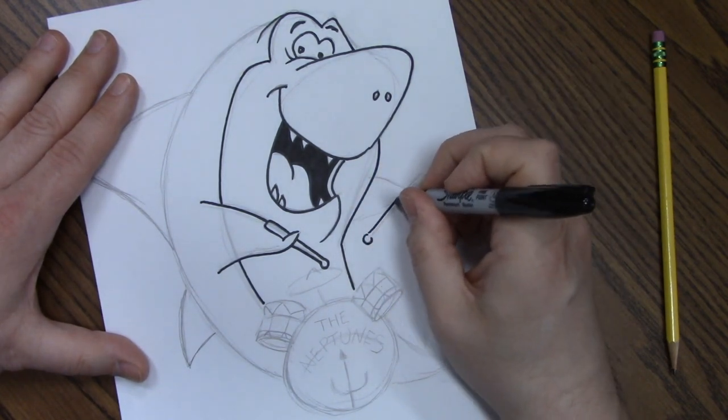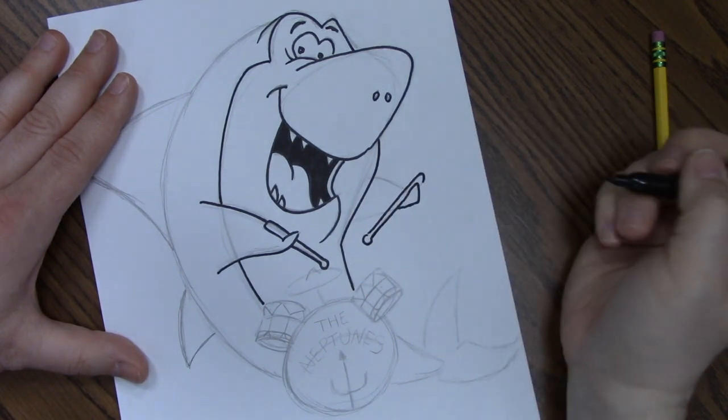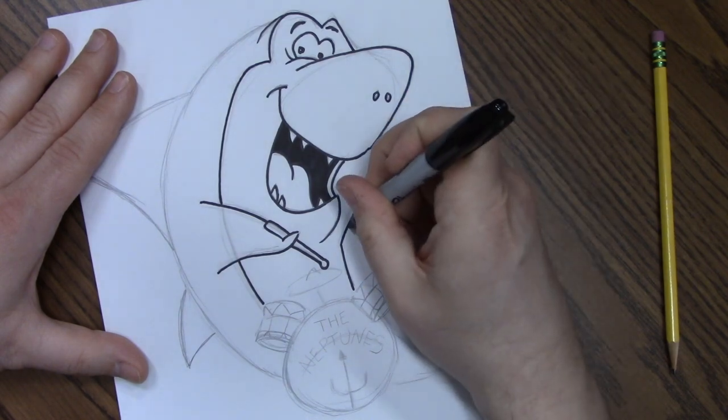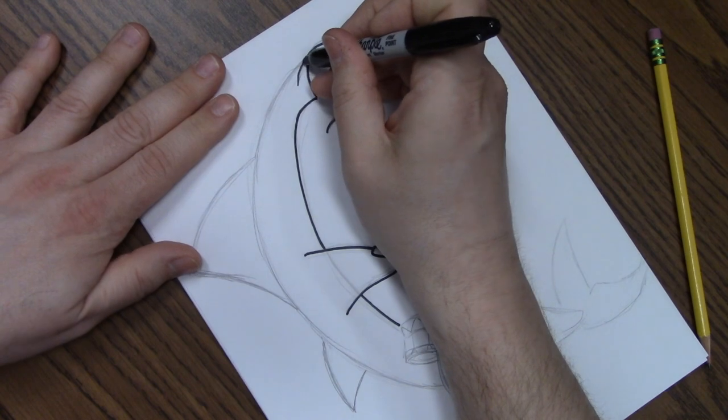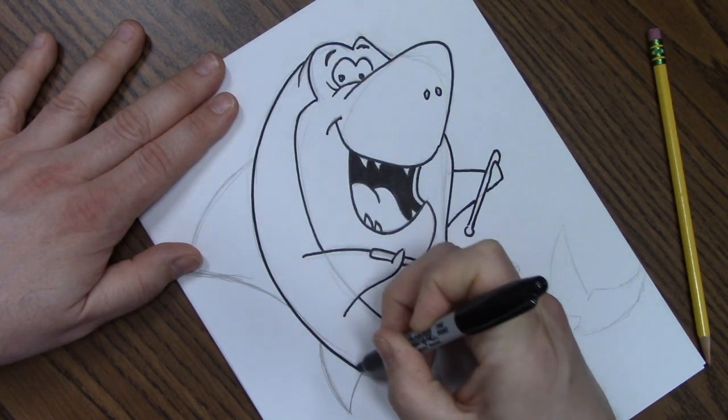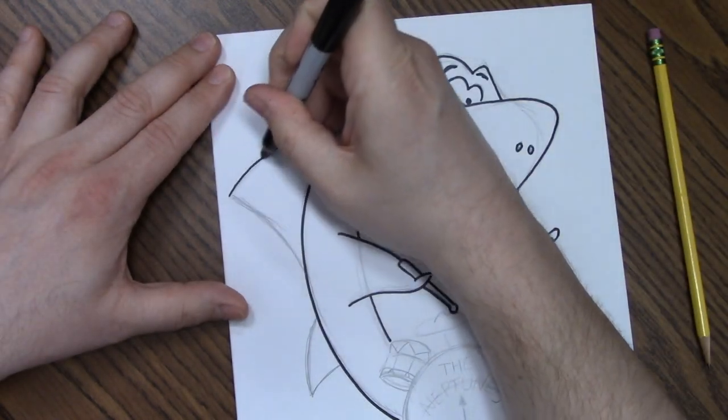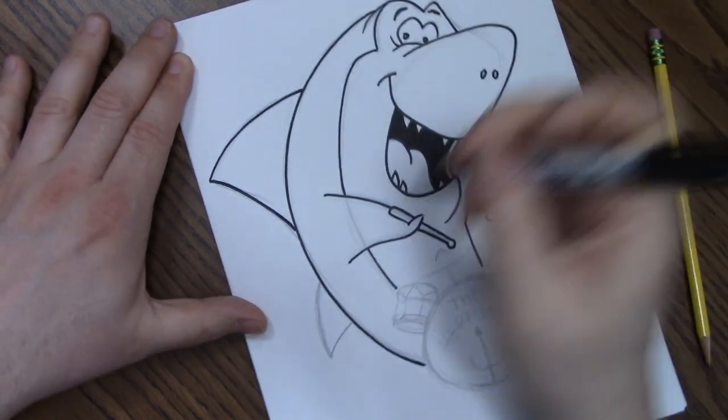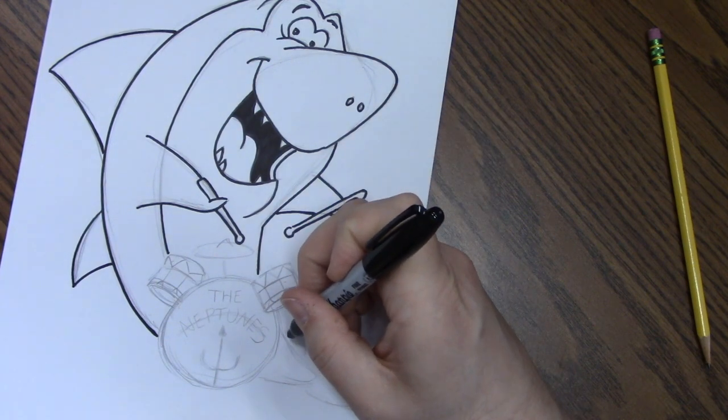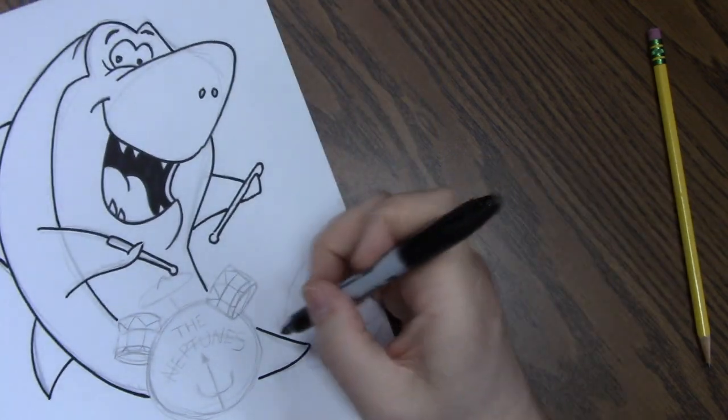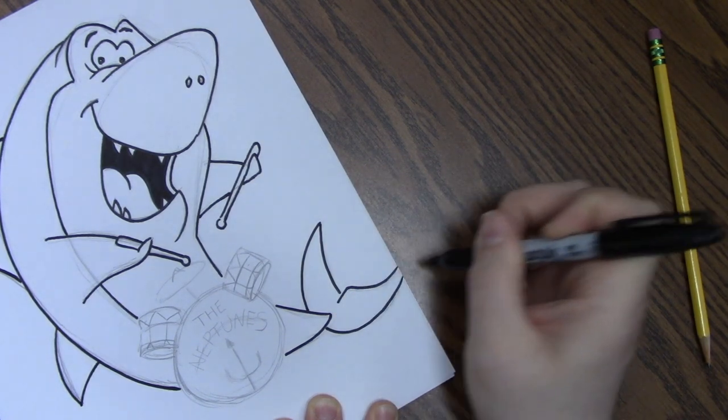Let's do this side. Drumstick. Fin holding the drumstick. Completed that fin. All right. We can do this side now. Uninterrupted line all the way down to the drum set. And we'll stop there. And then we'll do this fin. And this fin. And then skip the drums. We'll go back to it. And then we can do the tail here.